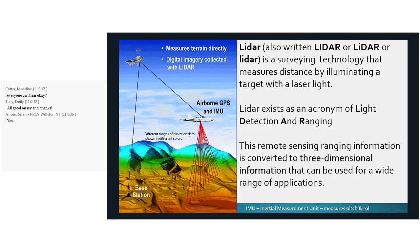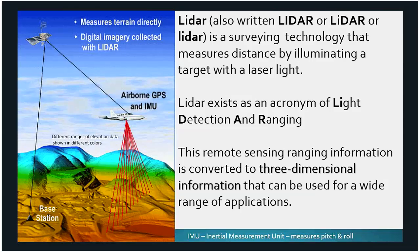LiDAR is captured from a plane that knows exactly where it is using GPS, satellites, and base stations. The plane has an IMU — an inertial measurement unit — because the plane is pitching and rolling, and they take that into account as the plane moves and changes position. LiDAR stands for light detection and ranging, and there are many different ways to spell it; the USGS has now decided it should be all lowercase.